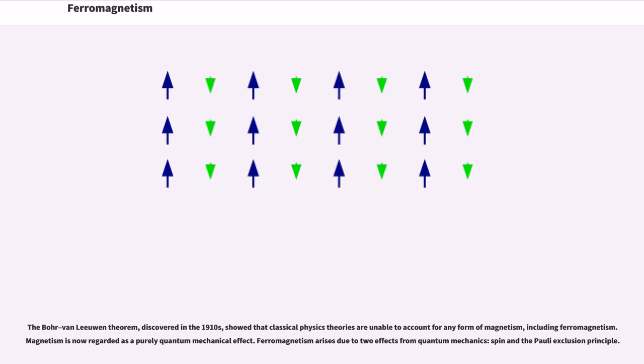The Bohr-Van Leeuwen theorem, discovered in the 1910s, showed that classical physics theories are unable to account for any form of magnetism, including ferromagnetism. Magnetism is now regarded as a purely quantum mechanical effect.